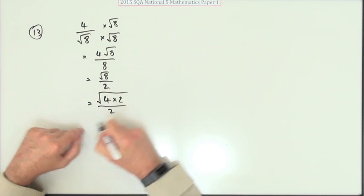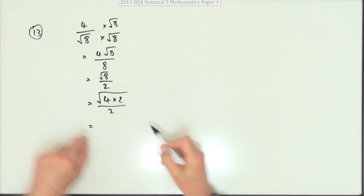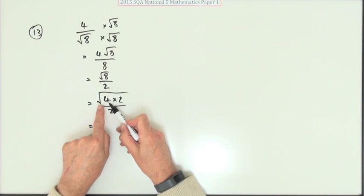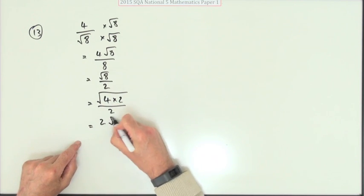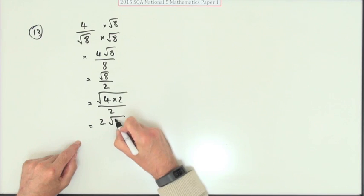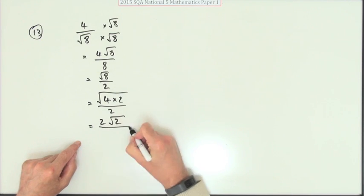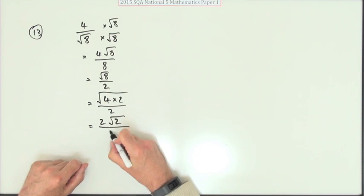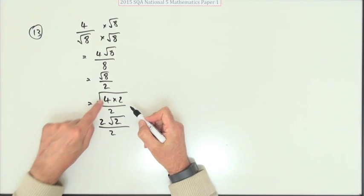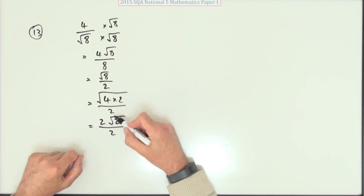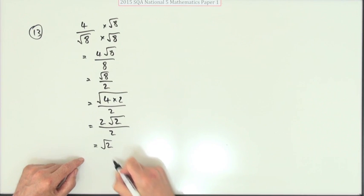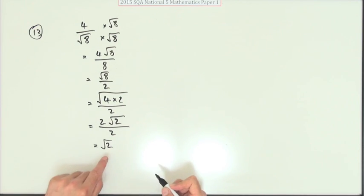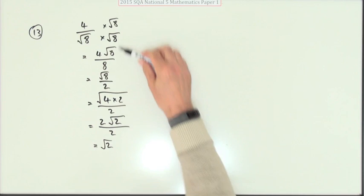Now root eight has lurking inside it a perfect square — that's four times two — so it breaks into the square root of four times the square root of two. The square root of four is two, giving you two root two over two, which cancels.